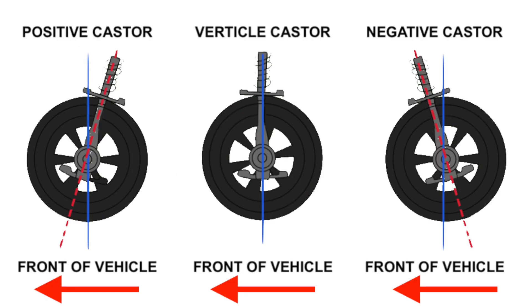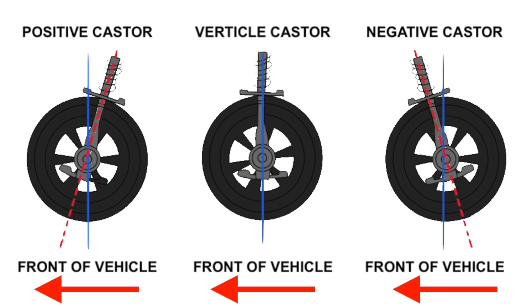If you extend the line through your front leg and it finishes in front of the vertical line, then this is positive caster. If your front leg is angled the opposite way and the line extends to a point behind the front wheel, this would be negative caster. Caster isn't actually determined by the angle of your front leg — that's just a simple way of seeing it in a car.